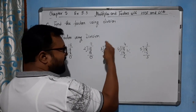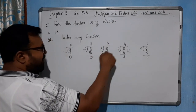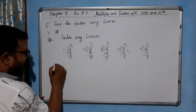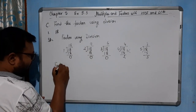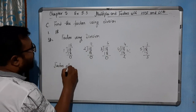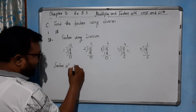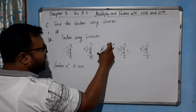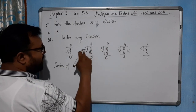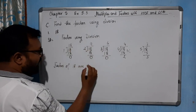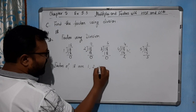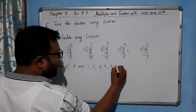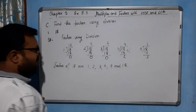Since 6 is already paired back, we return. So we can simply write: the factors of 18 are 1, 2, 3, 6, 9, and 18.